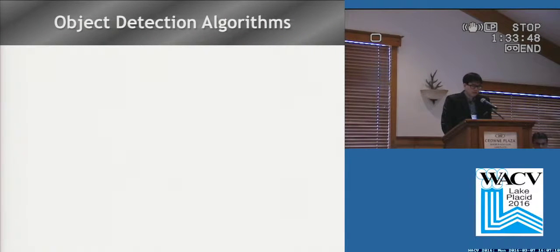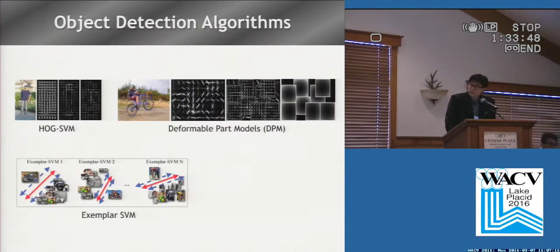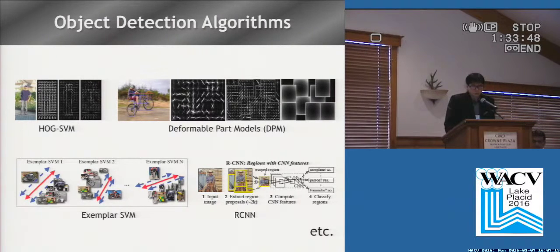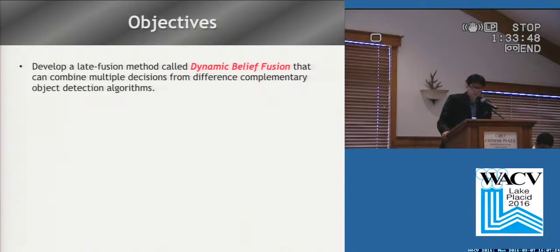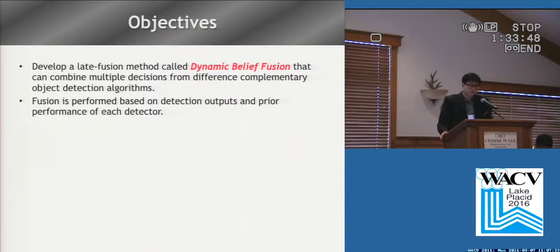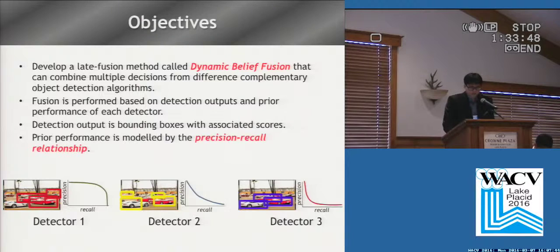In the last few years, various object detection algorithms such as HOG SVM, DPM, Exemplar SBM, and RCNN were introduced to us. In this paper, we developed a late fusion approach named dynamic belief fusion that can combine multiple decisions from existing object detection algorithms. This fusion is performed based on detection output and prior performance of each detector. Detection output is bounding boxes with associated scores. Prior performance is modeled by the well-known evaluation metric precision-recall relationship.